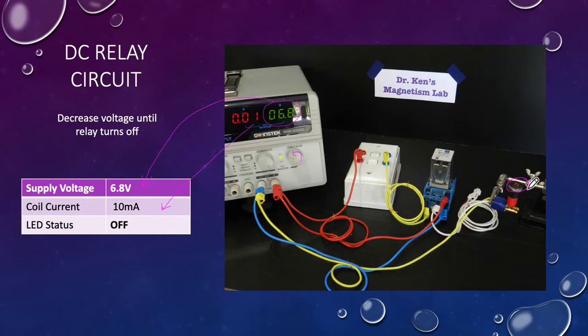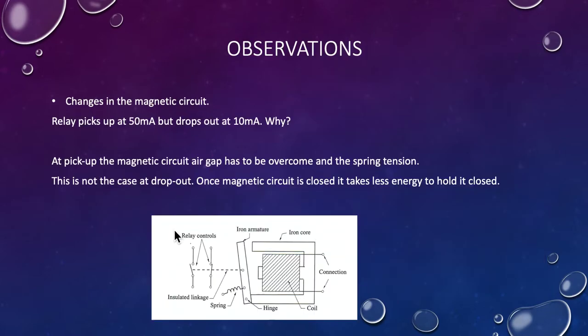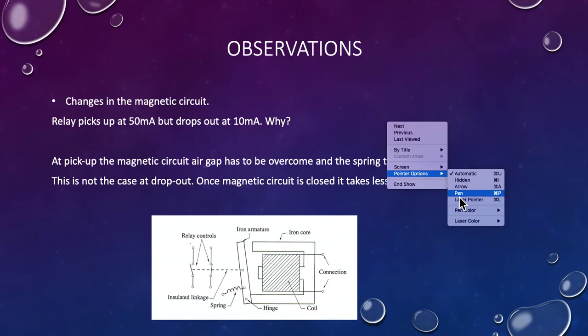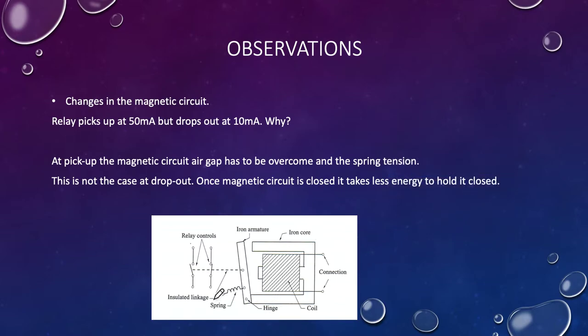What are our observations from this? First, thinking about changes in the magnetic circuit: the relay picks up at 50 milliamps but drops out at 10. Why is that the case? If we look at our drawing, here's our relay contacts physically connected to the armature. We basically have a solenoid. When we energize it, we're creating a magnetic path, and when the relay is not operated, there's this air gap, so we're going to get flux through here.